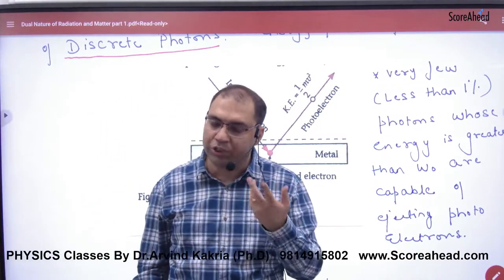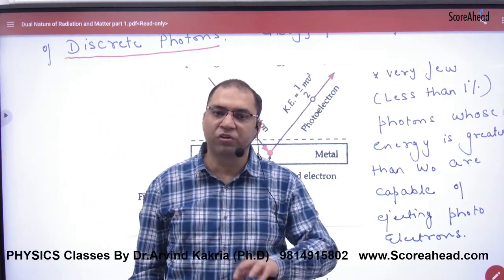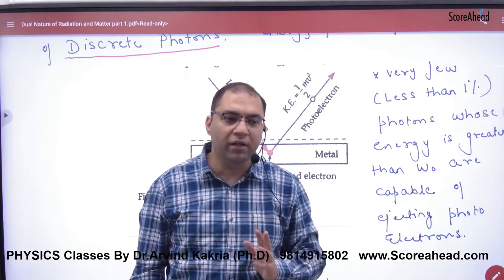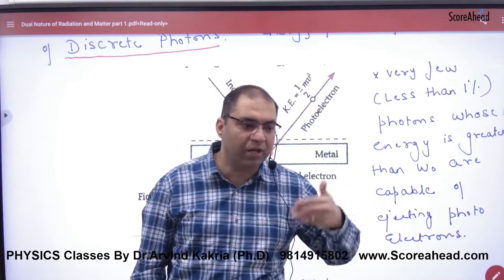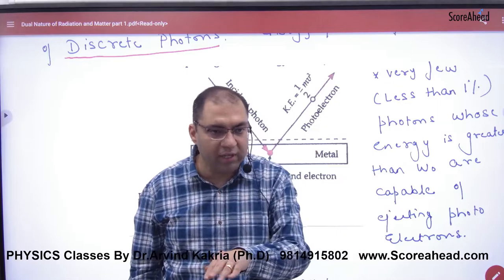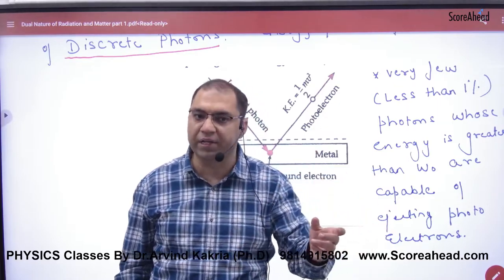If 100 photons fall on the metal surface, 100 electrons will not be ejected. The number of photons is higher, but the number of ejected electrons is lower.